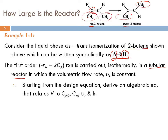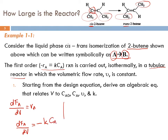Let's start with the design equation. For a plug flow reactor, the design equation is written as: dFA/dV = RA. And since minus RA equals K·CA, we can write dFA/dV = minus K·CA. Rearranging by cross multiplication: dV = dFA over minus K·CA.